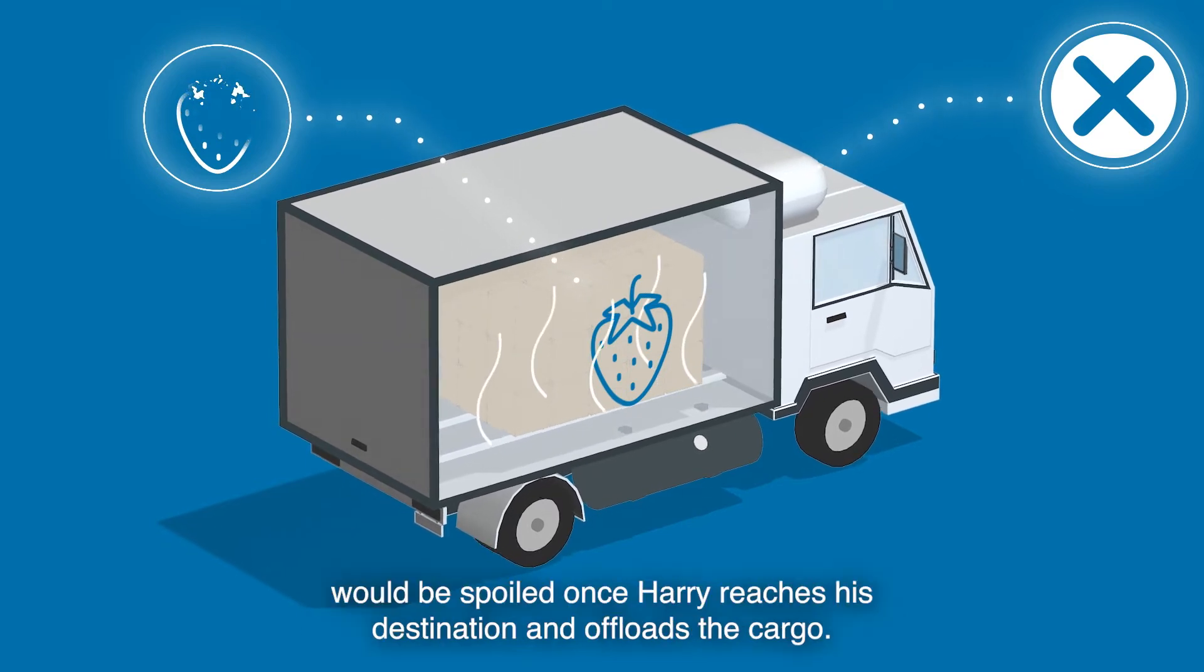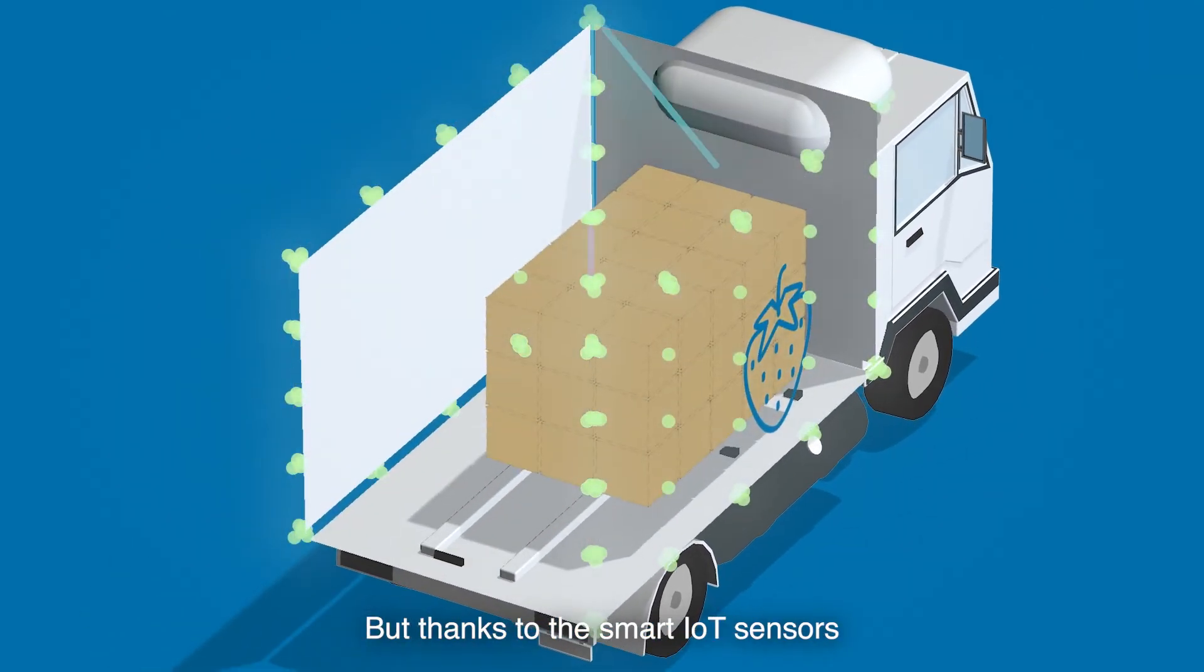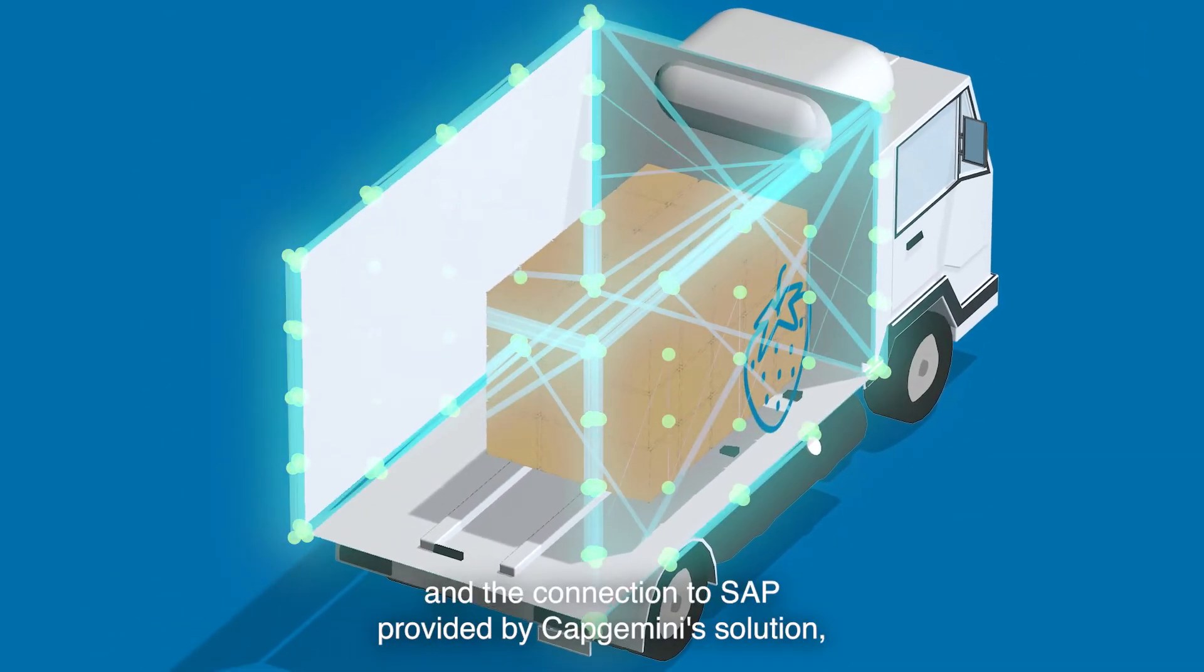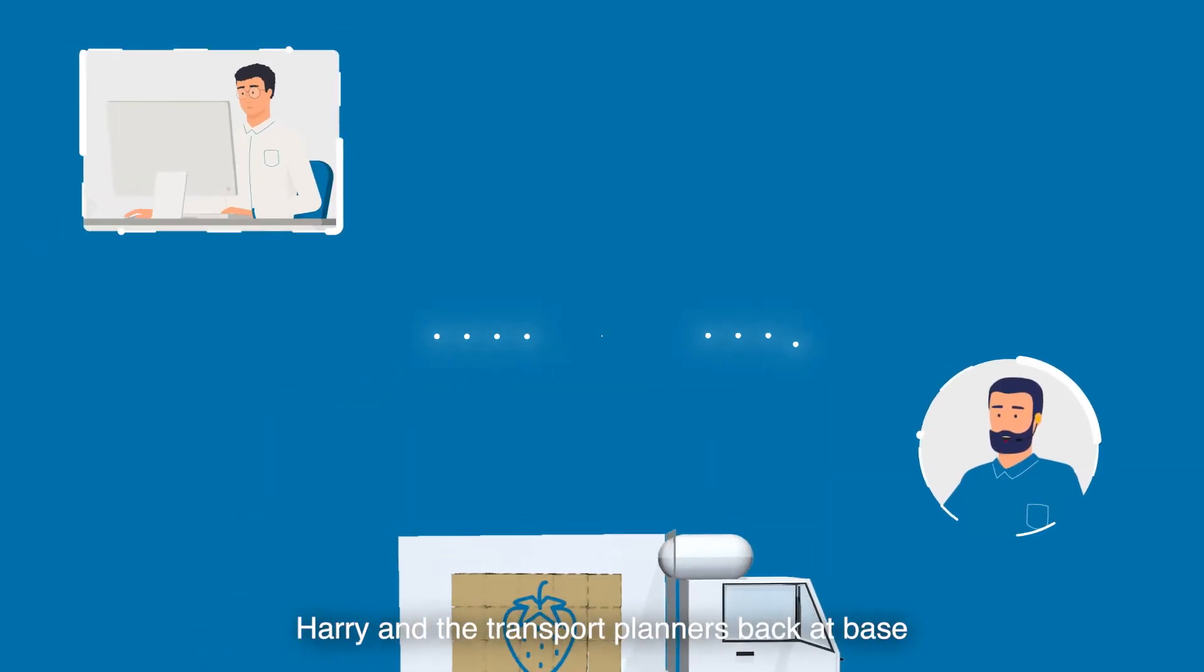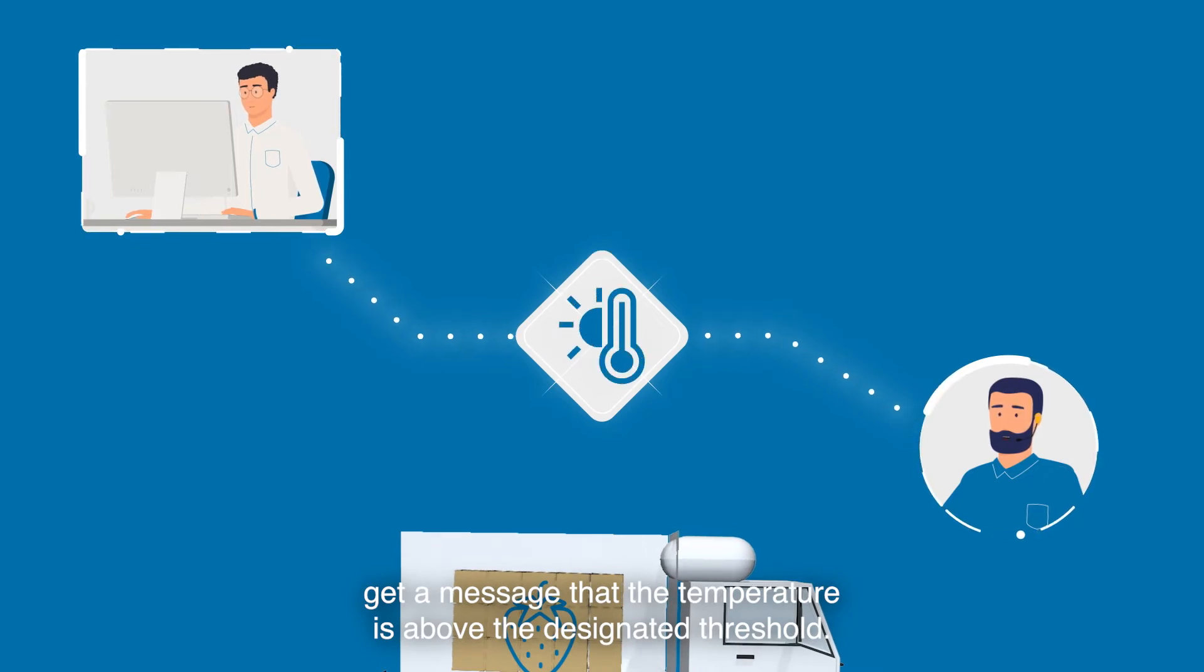Normally this would mean the strawberries would be spoiled once Harry reaches his destination and offloads the cargo. But, thanks to the smart IoT sensors and the connection to SAP provided by Capgemini's solution, Harry and the transport planners back at base get a message that the temperature is above the designated threshold.